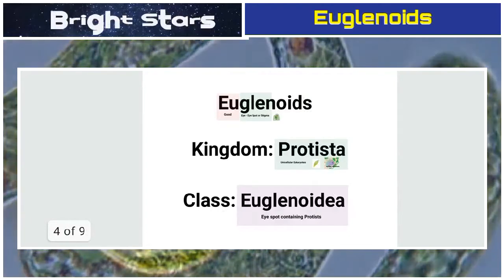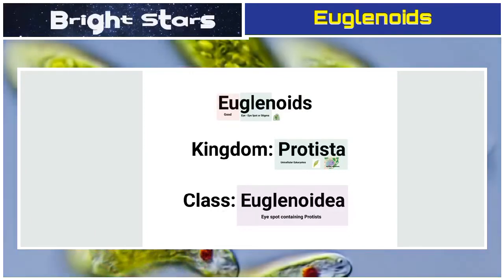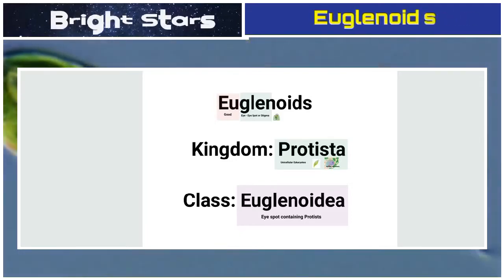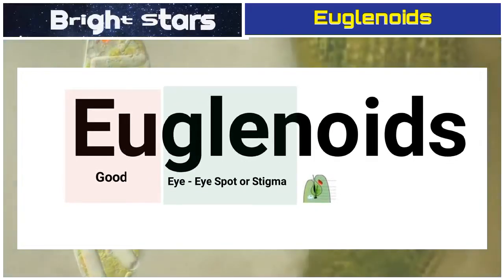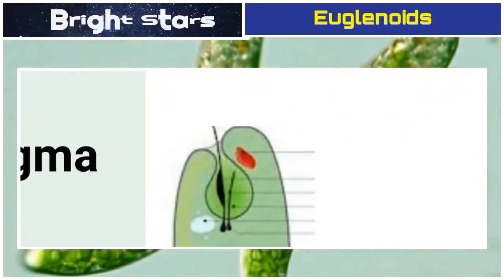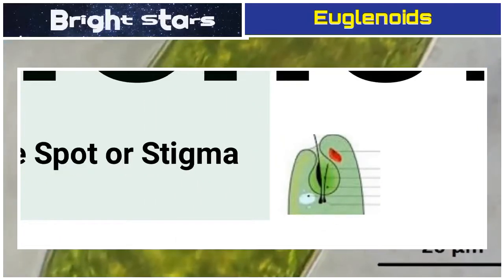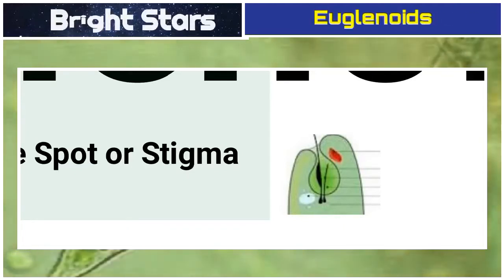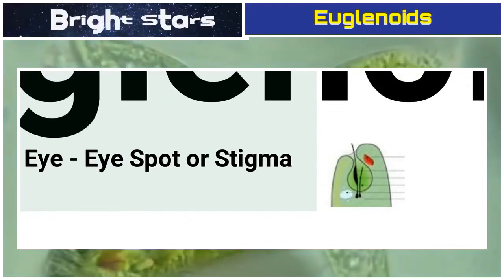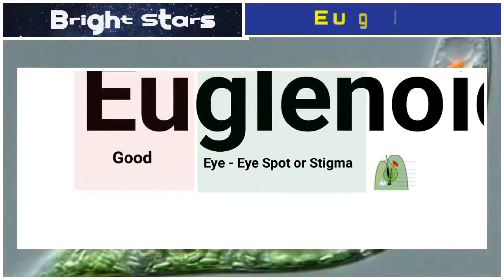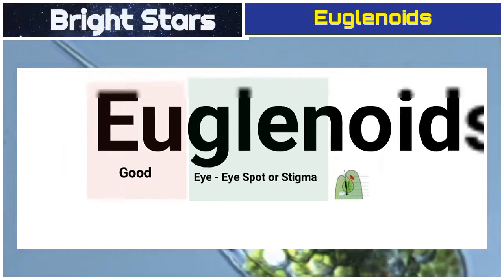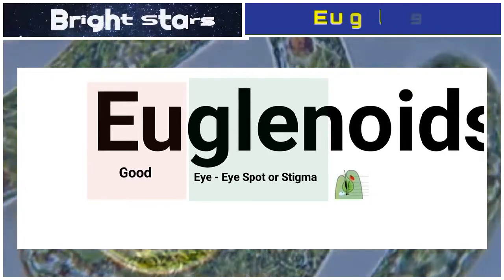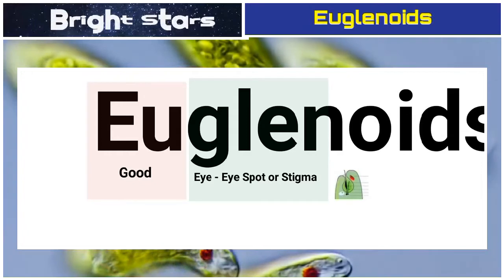Now let us understand the term 'euglenoids.' They belong to kingdom Protista, class Euglenoidia. The word 'euglena' comes from 'eu' meaning good, and 'glean' meaning eye spot or stigma. In euglenoids, there is a photoreceptor organelle called the eye spot or stigma, which receives sunlight and supplies it to the para-flagellar body, directing the flagellum toward available sunlight. This eye spot is the origin of the word 'euglenoid.'